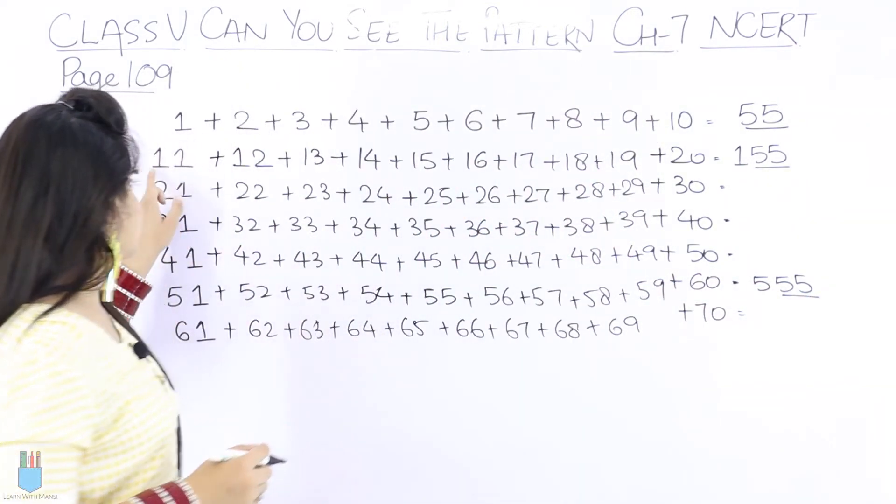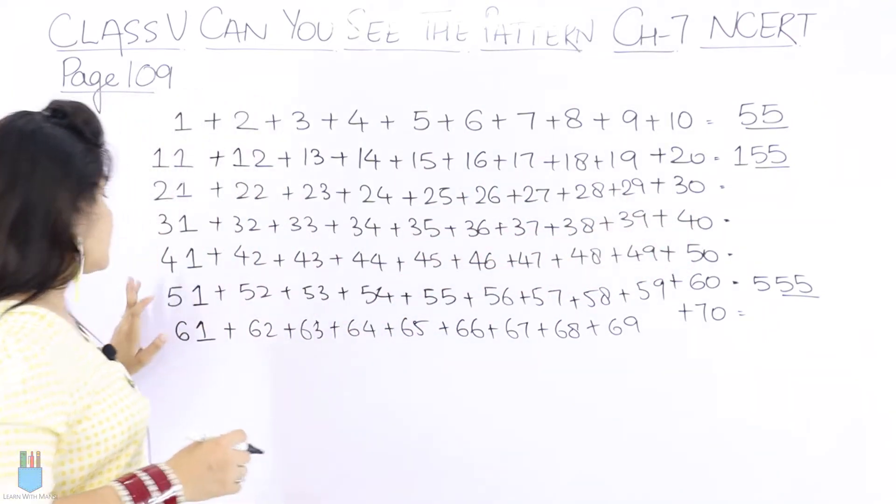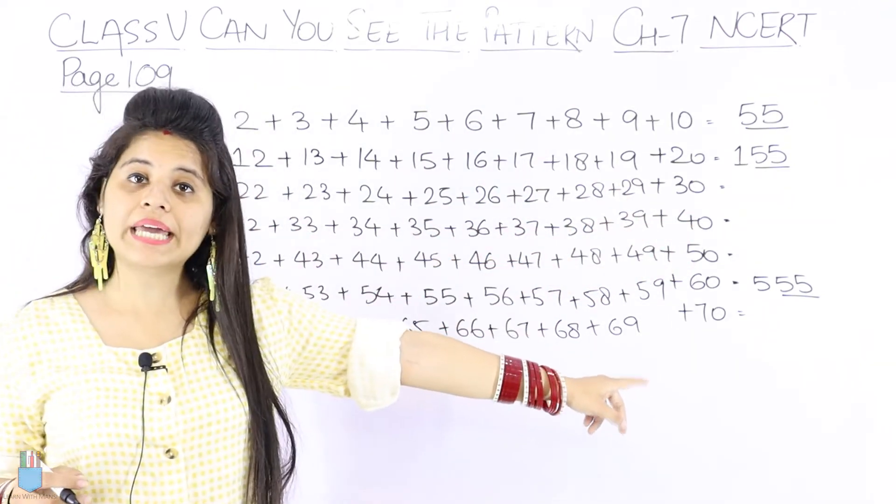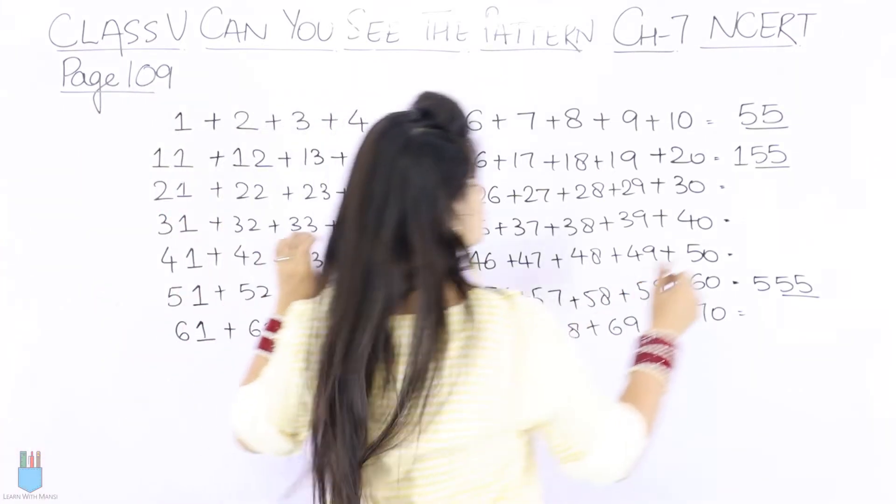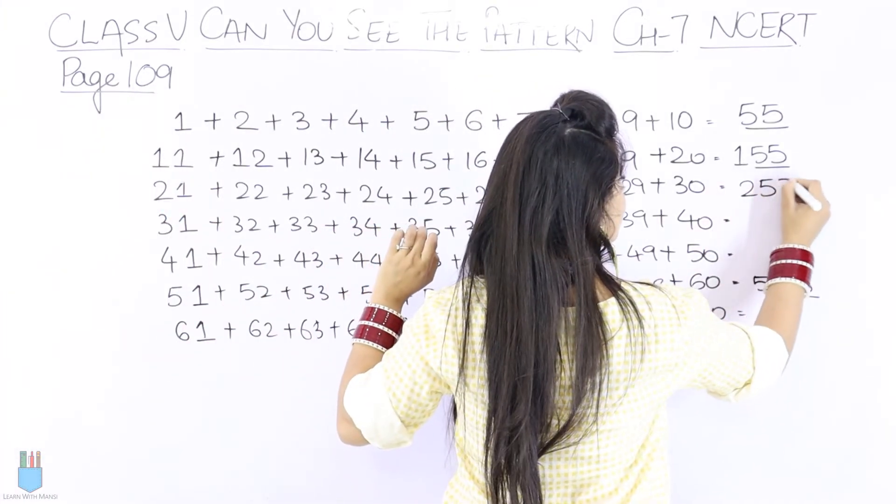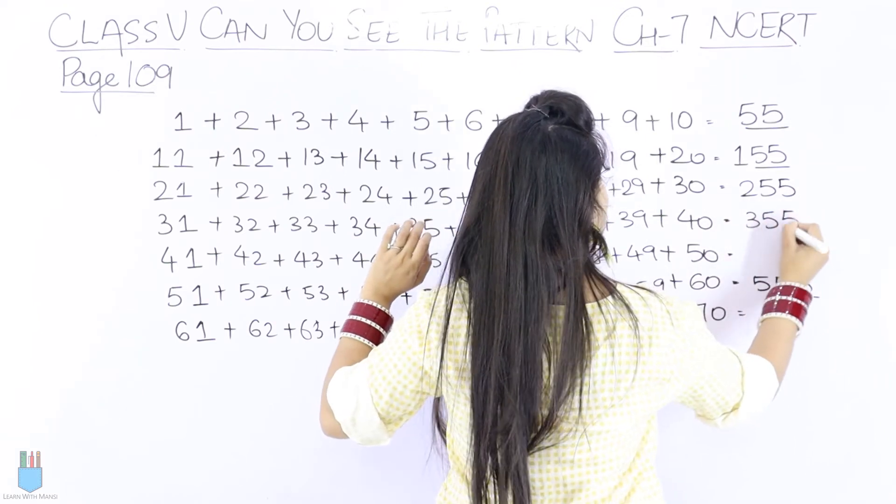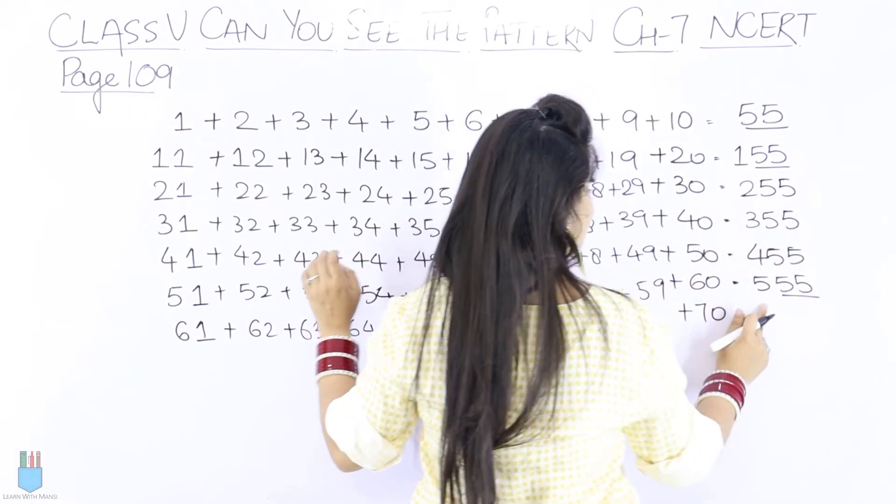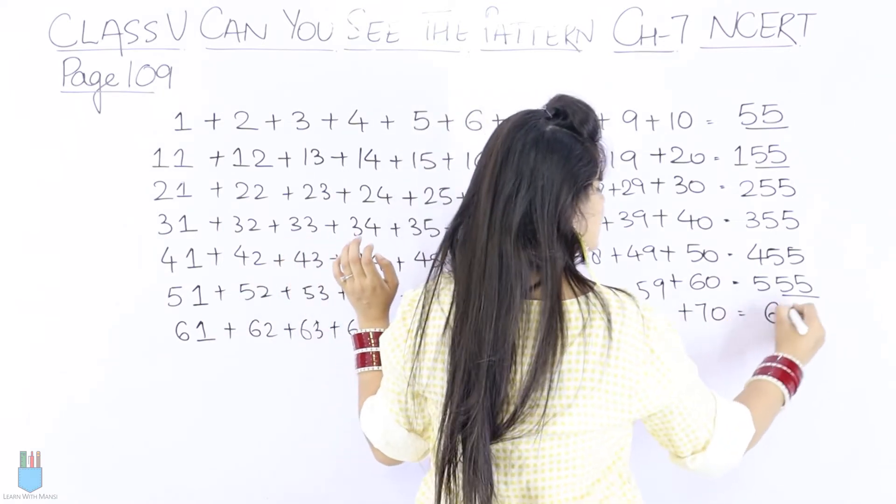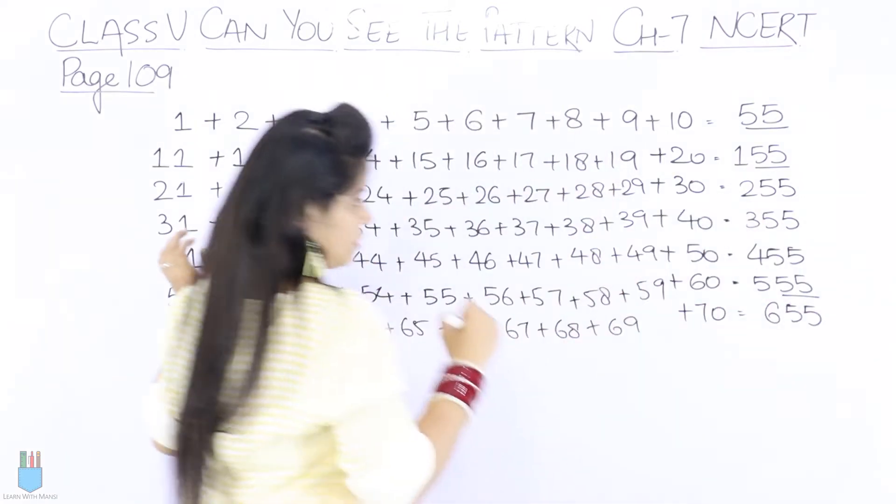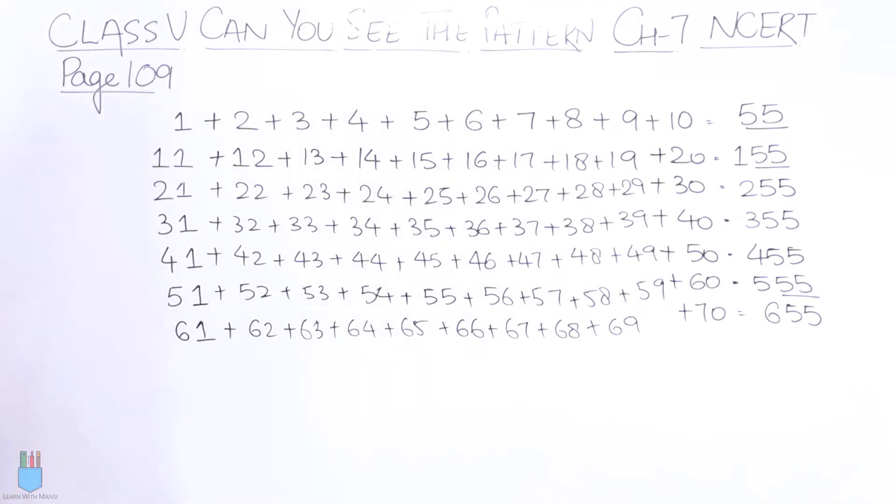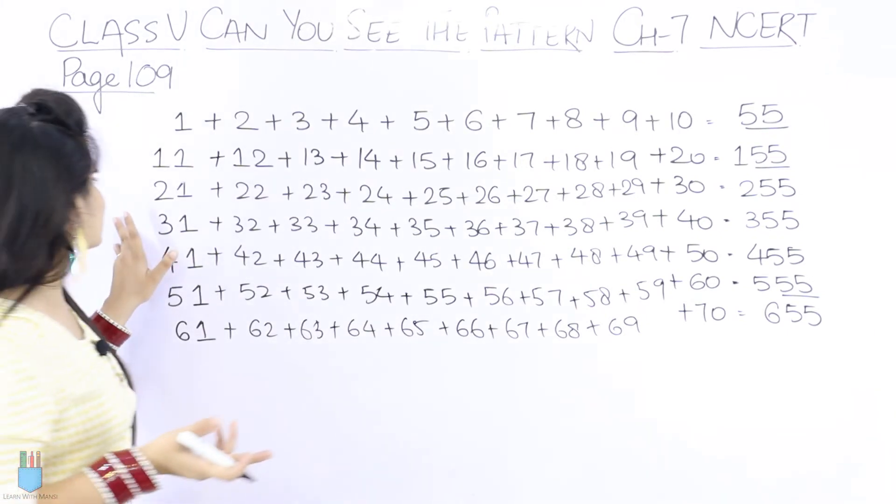When 1 was the line, 55 came to 1. When 5 was the line, 55 came to 5. So when 2 was the line, 2×55. When 3 was the line, 3×55. When 4 was the line, 4×55. When 6 was the line, 6×55. So we can observe patterns.